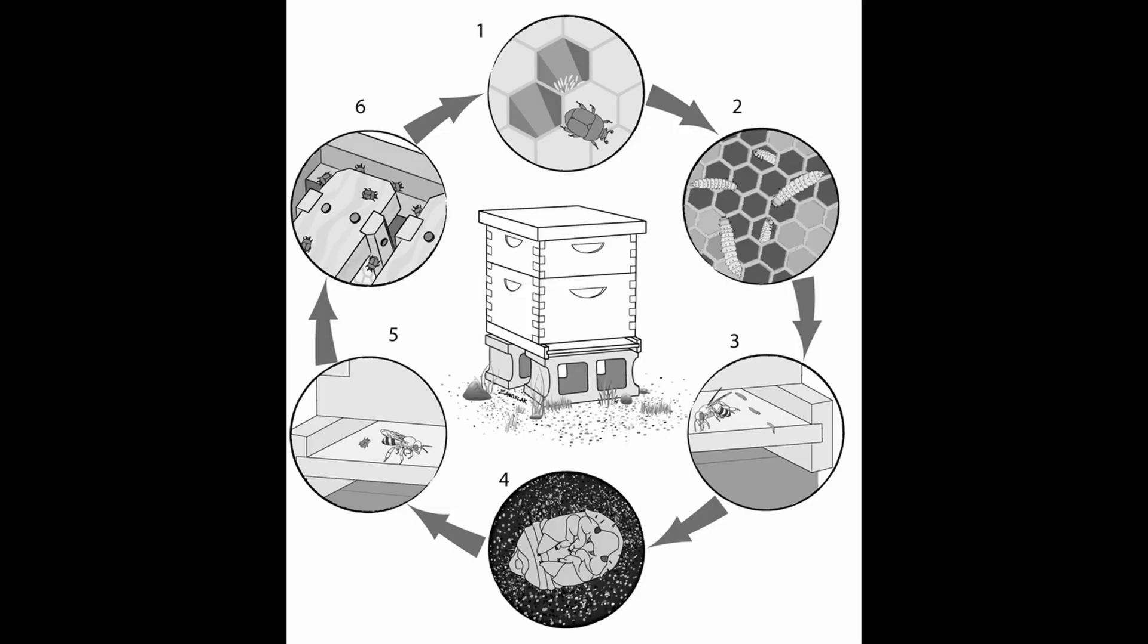And number four is that they burrow into the moist ground, then they pupate, and then they'll come back out of the ground. And number five is they fly in through the entrance of the hive.